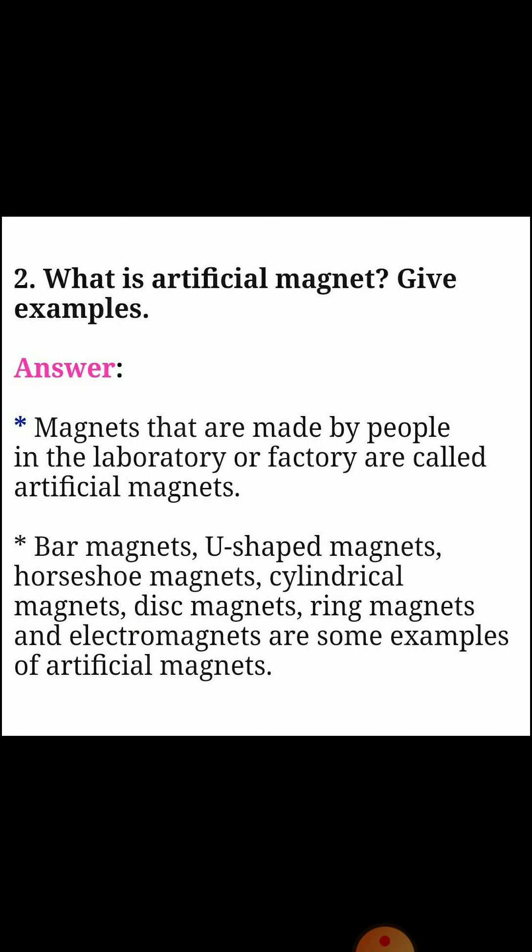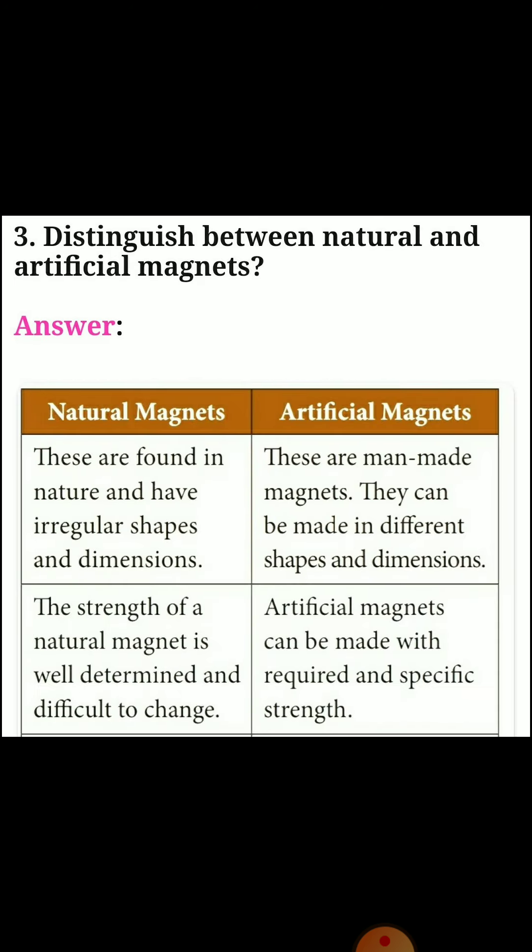Second question: what is an artificial magnet? Give examples. Answer: magnets that are made by people in the laboratory or factory are called artificial magnets. Bar magnets, U-shaped magnets, horseshoe magnets, cylindrical magnets, disc magnets, ring magnets and electromagnets are some examples of artificial magnets.